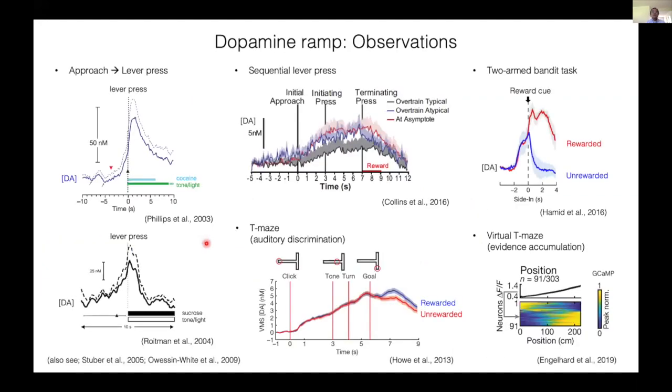One important issue is the dopamine ramp, as observed in many examples like here or here or here. Dopamine ramps at the timescale of seconds have been observed in various experimental conditions.